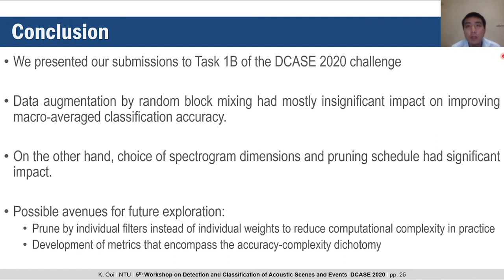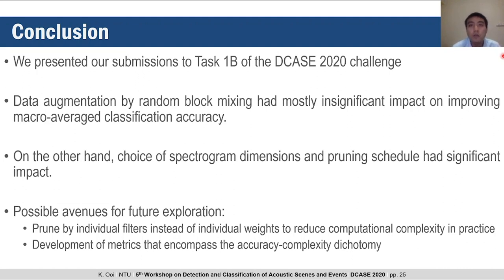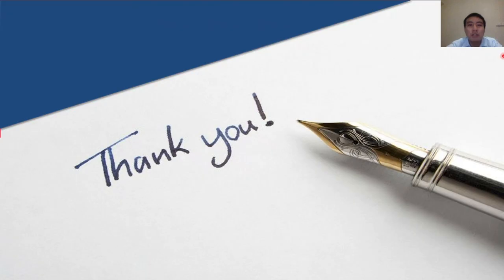In conclusion, we found that data augmentation by modified random block mixing had a mostly insignificant impact on improving macro-averaged classification accuracy, but the choice of spectrogram dimensions and pruning schedule had a significant impact. We only used pruning by individual weights, which preserves the number of filters and could be computationally inefficient in practice. Future work could explore pruning by entire filters to directly reduce GPU and CPU usage, as well as the development of metrics that account for both accuracy and model complexity. Thank you for listening.